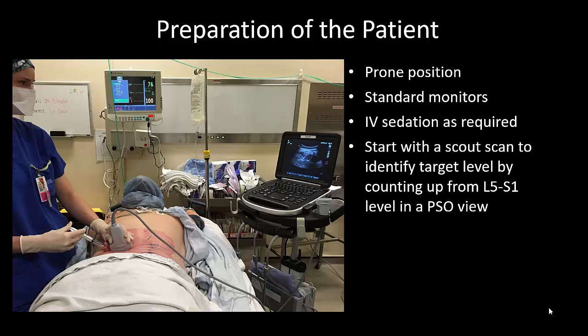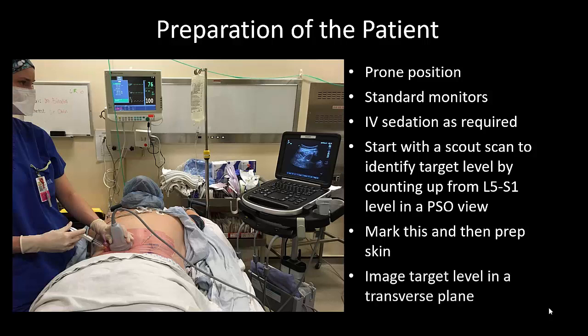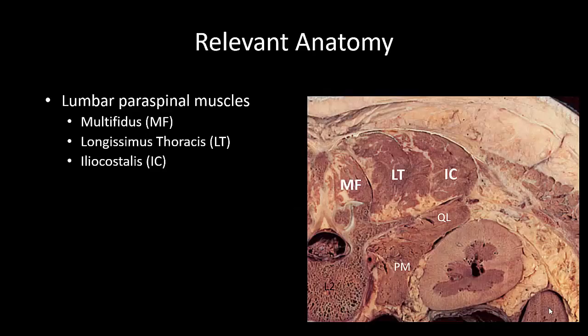Once this level is identified, the probe is turned into a transverse orientation and the block is performed using an in-plane needling approach. There are three muscle groups in the lumbar spine area. From medial to lateral, they are multifidus, longissimus thoracis, and iliocostalis.